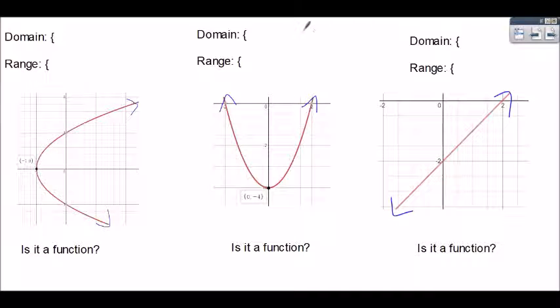So my domain is how far left? Well, it stops at negative one and it goes forever to the right. And then our range is how far down does it go? It's going to keep going forever. How far up is it going to go? It's going to go up forever. So if it goes both down forever and up forever we say all real numbers. And then is this a function? I'm going to do my vertical line test and draw a line straight down. It crosses once, twice, so we're going to say no.